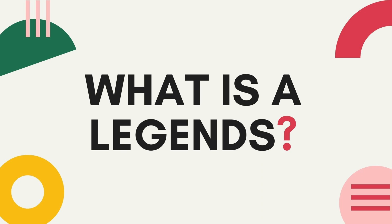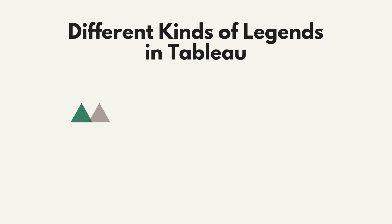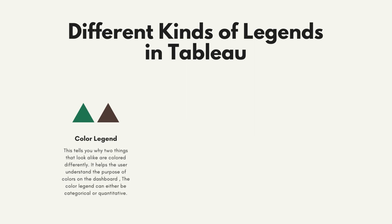Legends have been by far the most less valued views on a dashboard. We mostly use the default legends, but minor modification to a legend can really help the user in understanding the visual simply and clearly. There are basically three types of legends. The first one is a color legend. This tells you why two things that look alike are colored differently. It helps the user to understand the purpose of color on the dashboard. The color legend can either be categorical or quantitative.